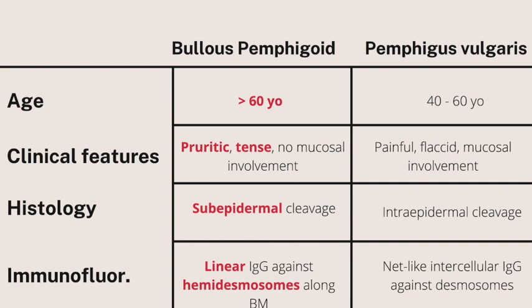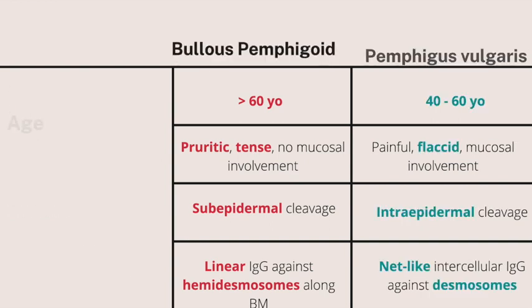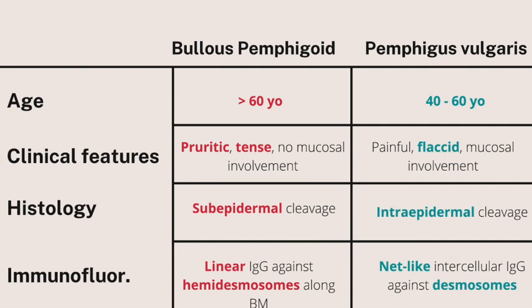So now you're probably thinking: great, I know bullous pemphigoid down pat — how will I remember pemphigus vulgaris? Well, for pemphigus vulgaris, you can think of it as the opposite. These patients are usually younger or middle-aged, between 40 to 60 years old. Their bullae are not tense — they are flaccid and painful. They also have mucosal involvement. On histology, you will see intraepidermal cleavage, and immunofluorescence reveals net-like intercellular IgG against desmosomes.